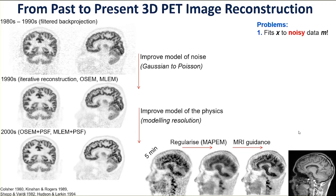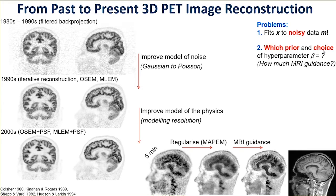To highlight issues with these conventional methods: if we stick with methods without regularisation, we'd be fitting the reconstructed image X to noisy data M. If we choose to regularise using MAP EM or MR guidance, the problem is what prior should we use and how strong should it be — and just how much of that MR guidance should we be using? These are remaining issues with classical or even state-of-the-art methods that do not yet use AI.